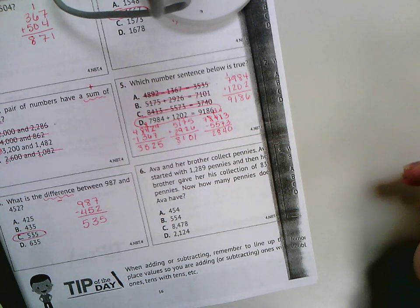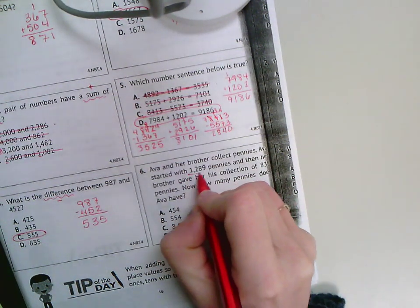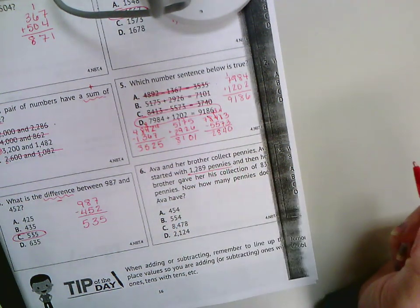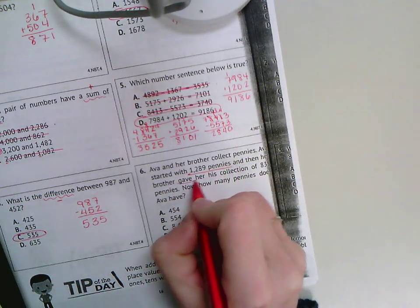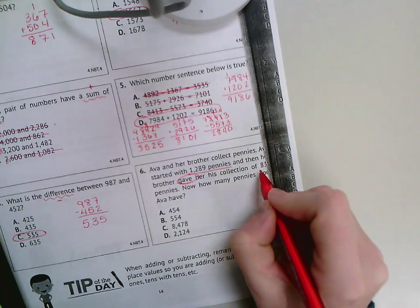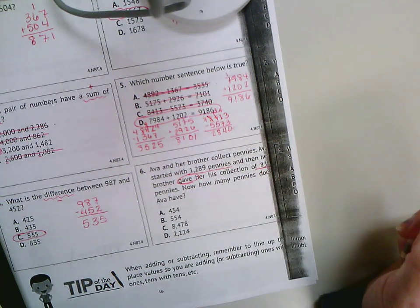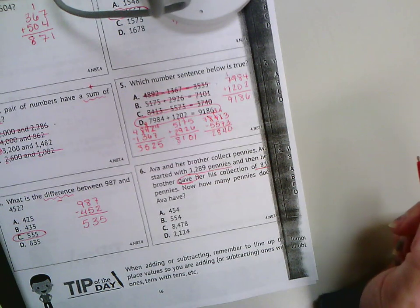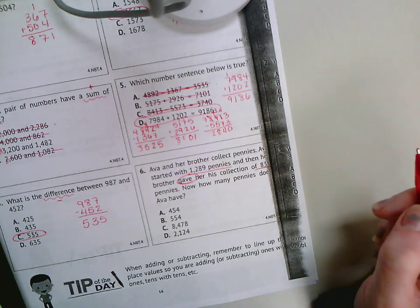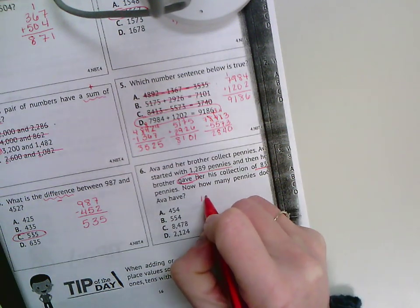And letter D, a story problem. Ava and her brother collect pennies. Ava started with 1,289 pennies, and then her brother gave her his collection of 835 pennies. Now how many pennies does Ava have? Well, when someone gives you something, you end up with more, which means I'm going to add.